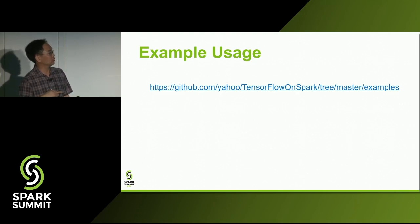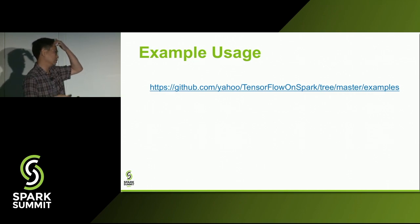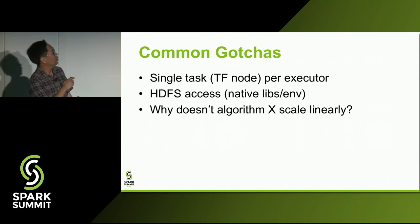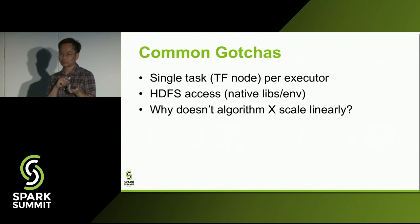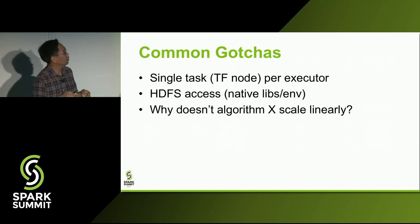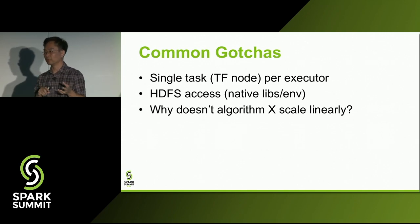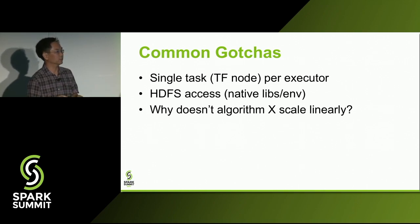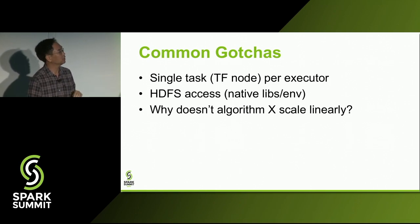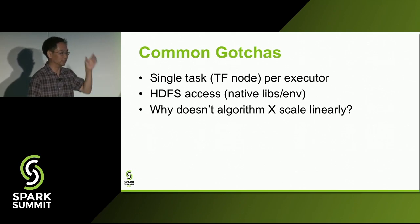We have examples on our GitHub repo for converting an existing TensorFlow distributed application to TensorFlow on Spark. One gotcha: we assume a single task per executor. The most visible outcome is that your Spark executor log is literally your TensorFlow application node's log — so if you have three executors, you have three TensorFlow nodes and clean logs for each one.